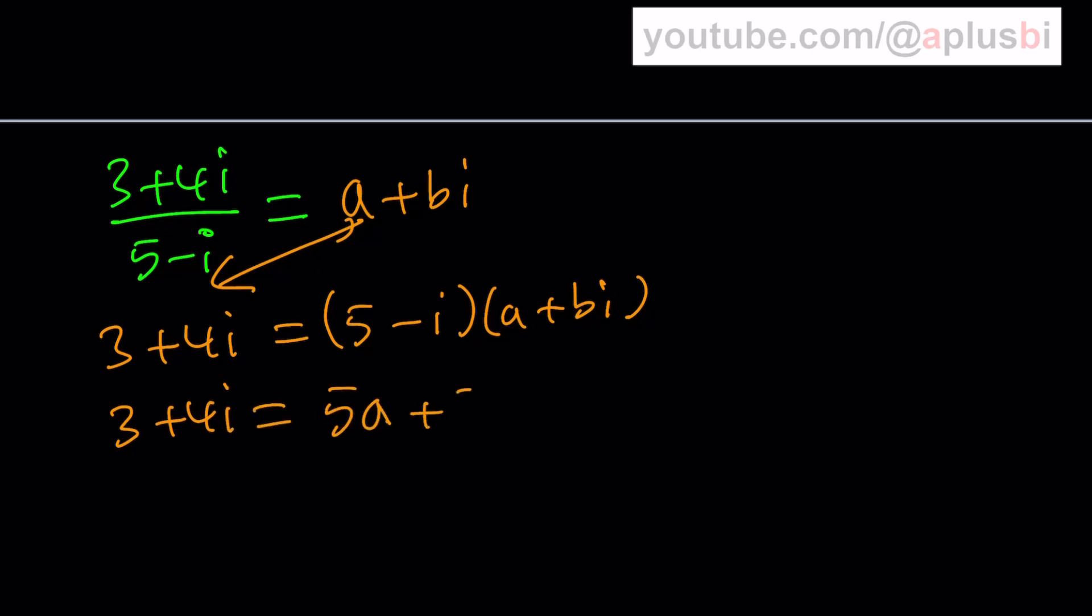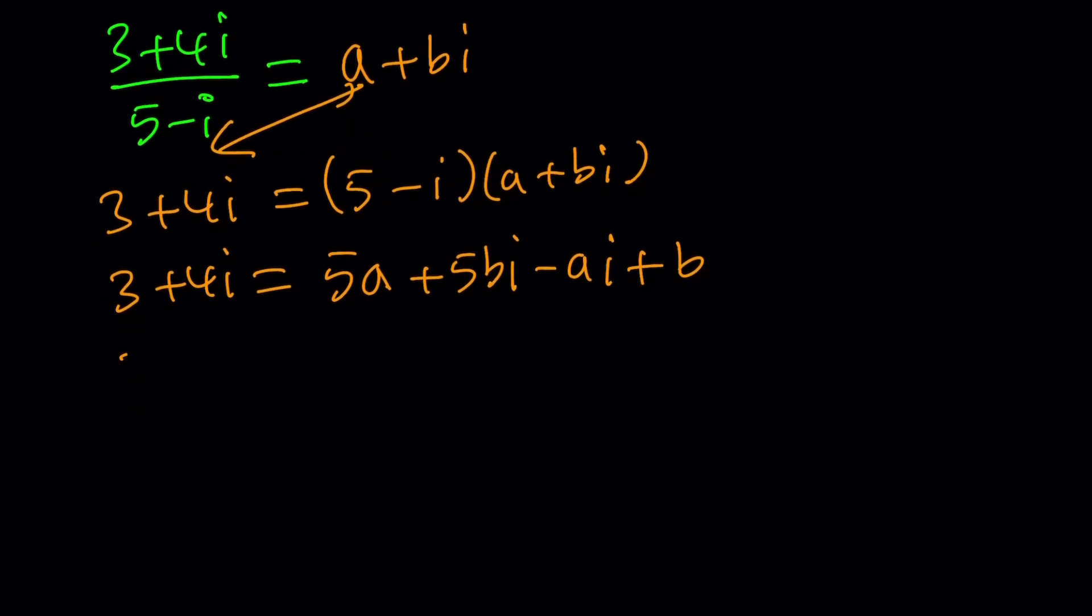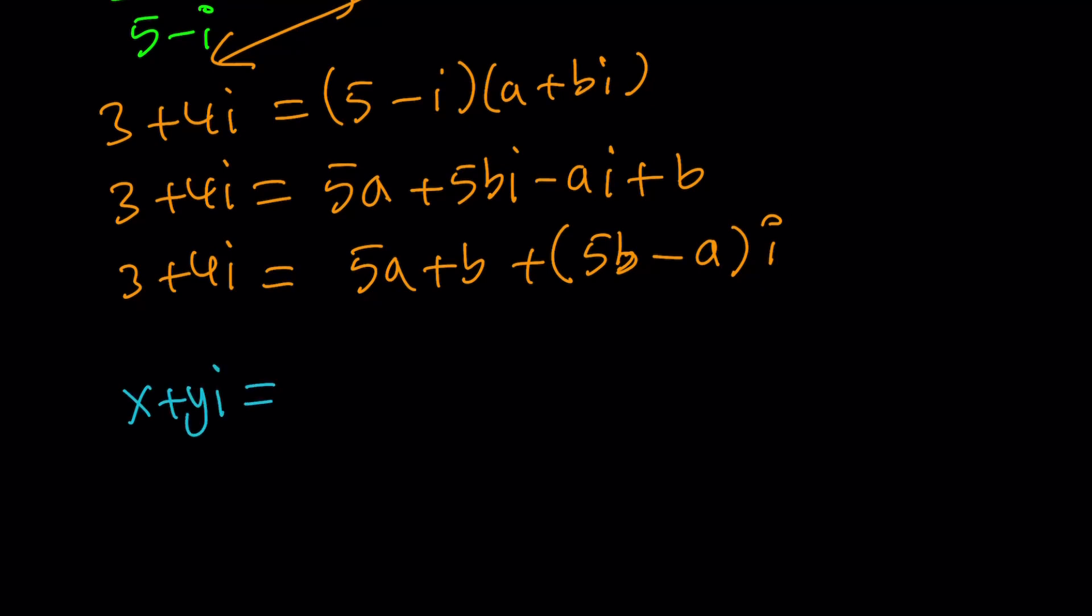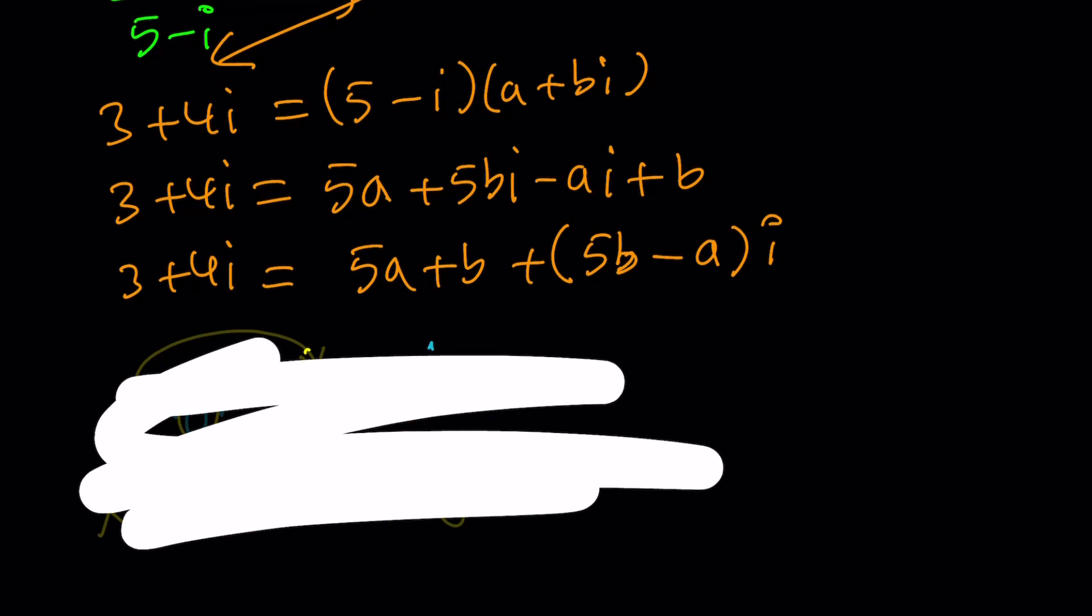5a and then 5bi minus ai and then minus bi squared, which is plus b. And then simplify further: you're going to get 5a plus b and 5b minus a as the imaginary part. Now we didn't talk about this in a formulaic way, but we can just briefly mention it. When two complex numbers are equal, what do I mean by that? If x plus yi is equal to z plus wi, this implies x is equal to z and y is equal to w. In other words, if two complex numbers are equal, then the real parts are equal and their imaginary parts are equal. That's the only way this can happen. Make sense? I hope it does. So now we talked about it, hopefully this made sense.